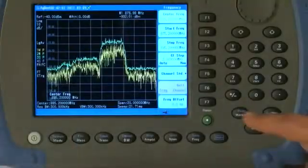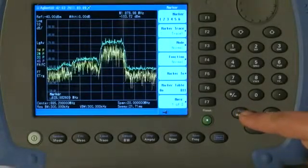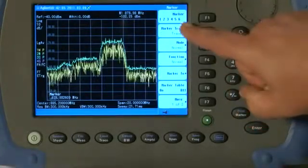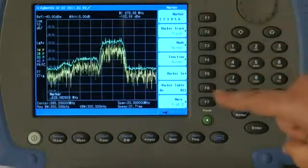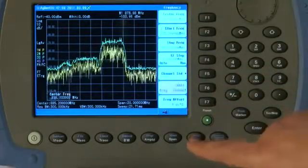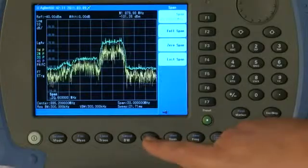If we want to put a marker on the signal, just press the marker button, and you will see to the right of the display, there are seven soft keys, the meaning of which changes depending on which function key we have pressed.